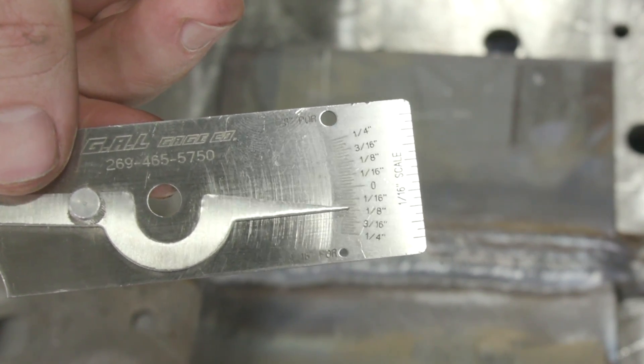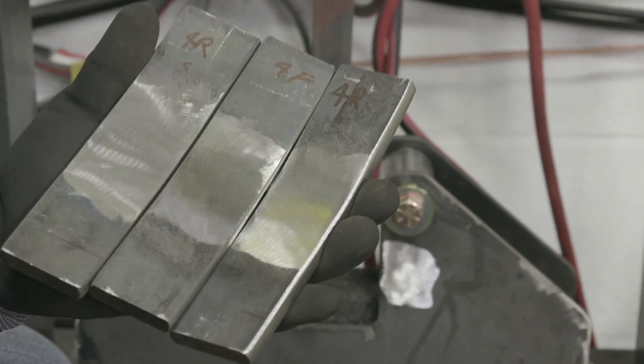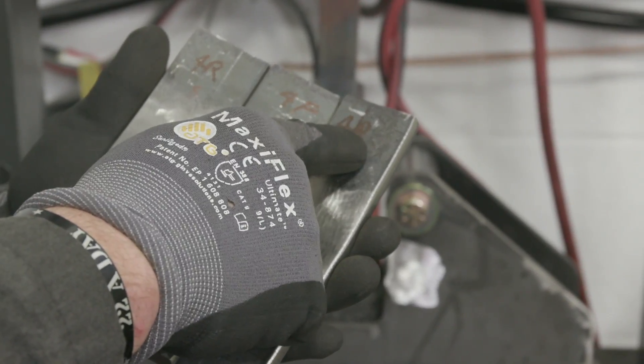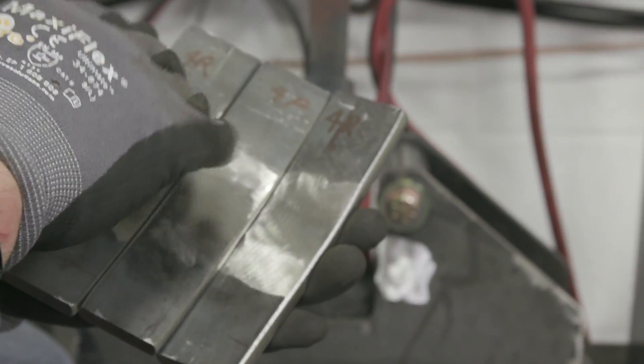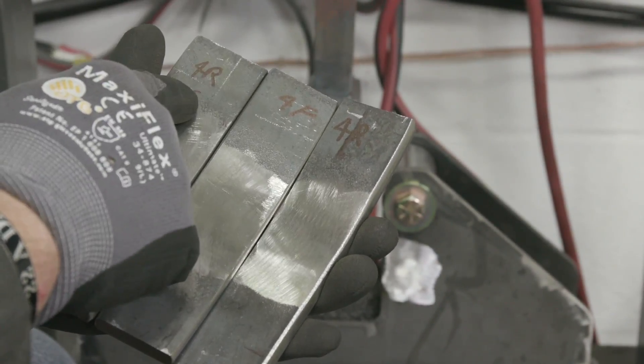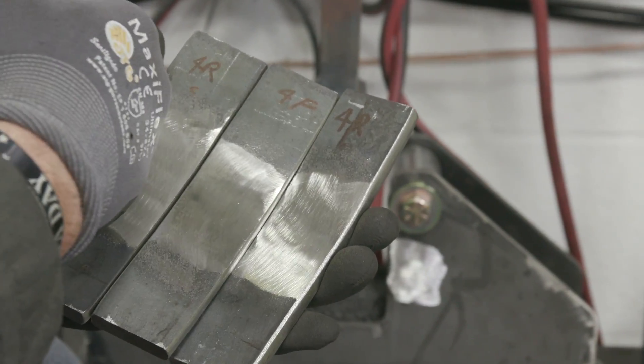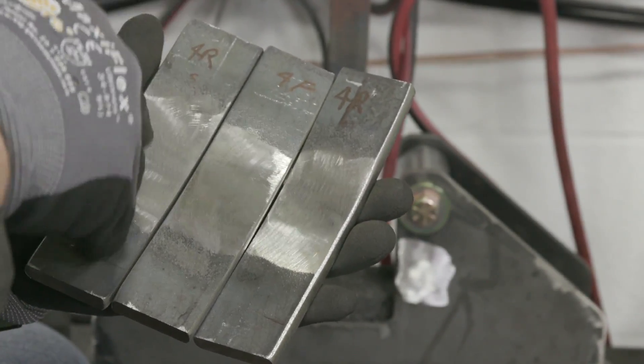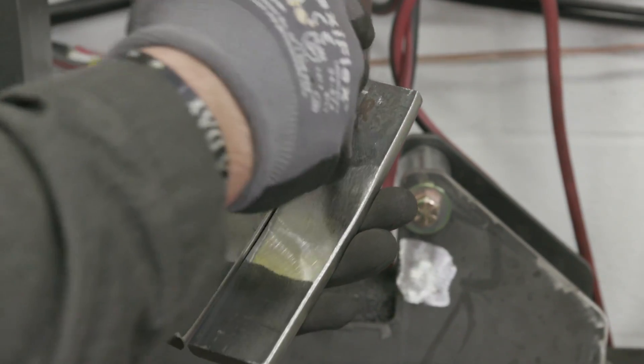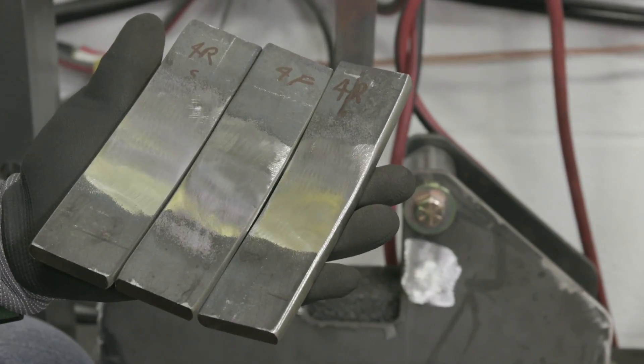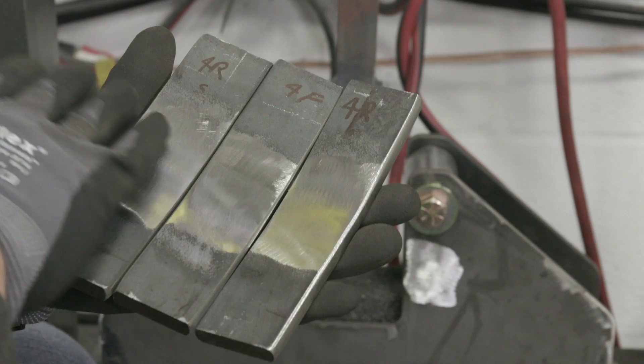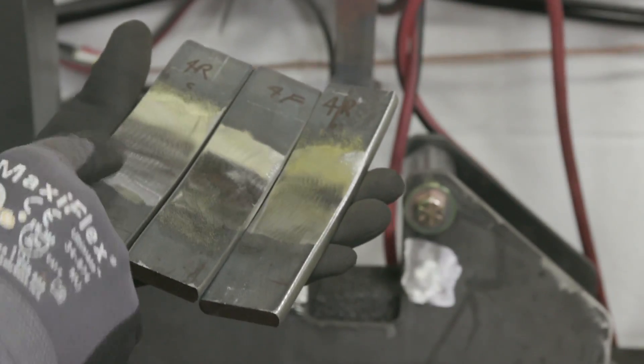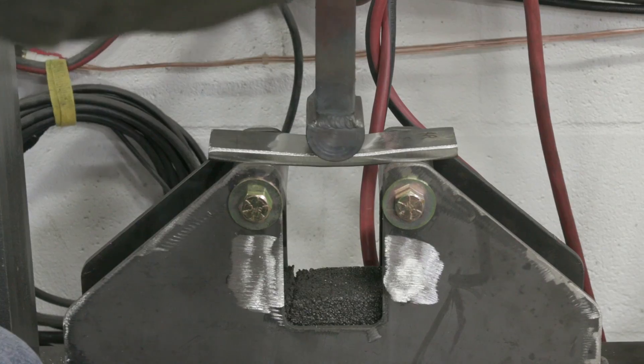We got our three samples ready. This is labeled 4R, 4F, and 4R. 4 is the position, overhead. This is going to be our root bend, face bend, and root bend. These are the order they came out of the coupon. We made sure all of our grinding marks are perpendicular to the way that it's going to be bent. That's just going to help you out. Corners are radius. We're ready to go. I'm just going to bend them in order, so we'll start off with the bottom part of the plate, which would be the root. Apply the plunger to the face. All the force will be generated to the root.